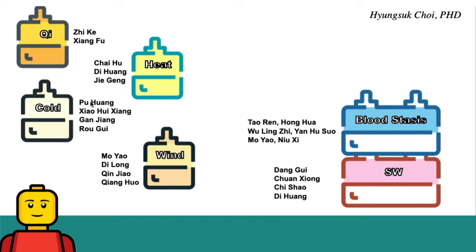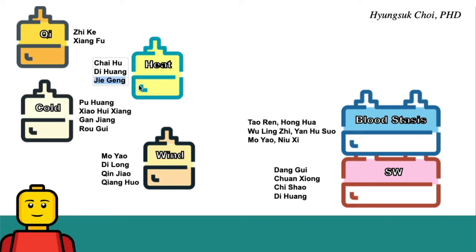There is also a warming module: Puwang, Xiaohu Xiang — very warming property herbs. And Ganjang and Rougui. All these herbs warm the interior. And Chaihu and Dihuang clear the heat.